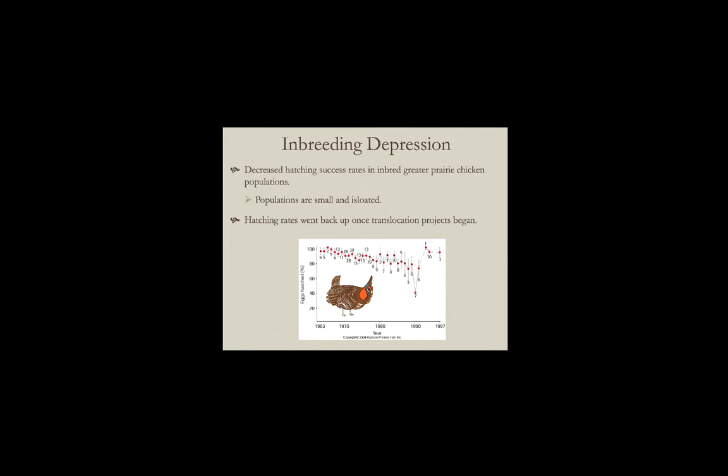We do this with red-cockaded woodpeckers in East Texas and throughout the southeastern U.S. Their populations are often very isolated and some have problems with hatching success. The Forest Service has a translocation project where individuals meet in different areas, discuss how their populations are doing, and those populations doing well with an excess of individuals provide birds to move to a smaller struggling population.